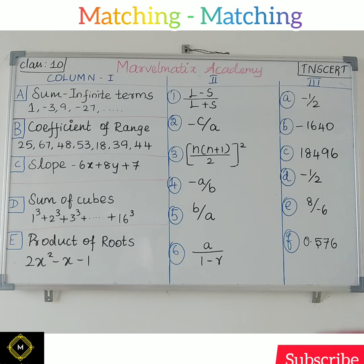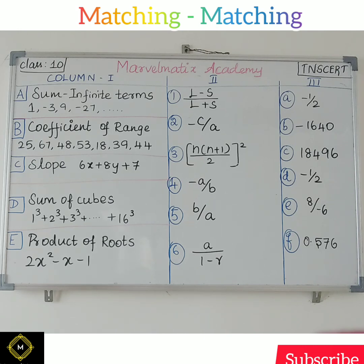Third column: slope. So, 6x — this is minus — 6x plus 8y plus 7. So you can do all the answers.